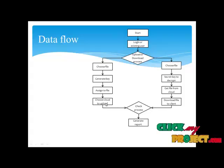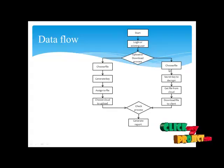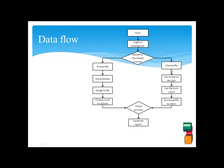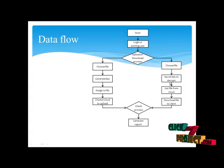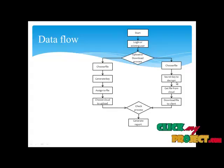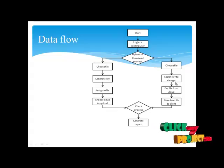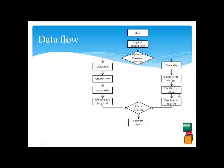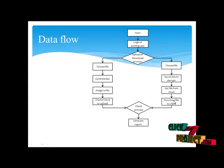The cloud server and providers are selected, and the related process is verified and a report is generated. In the download process, the same file is chosen from cloud storage and the key is verified against user details. An authenticated user can then download or view the text of the files. After decrypting the file, the original file can be used by the server admin, and access is given to the provider to decrypt the file and deliver it to the client.